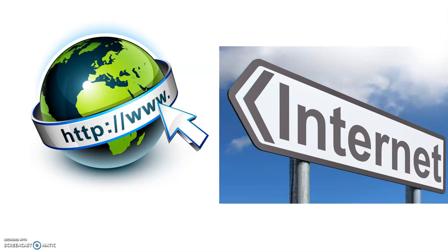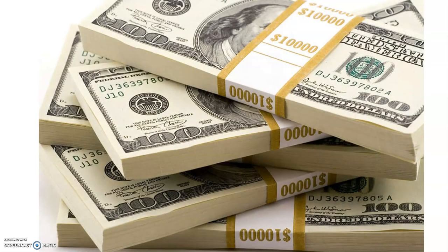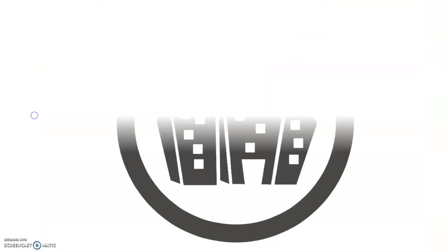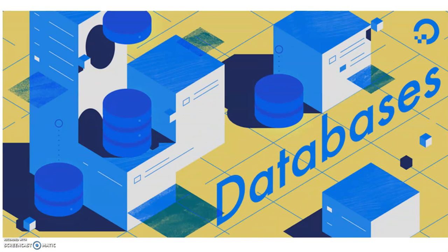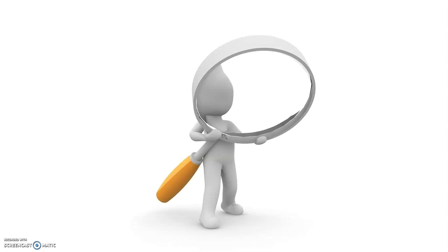Today we have the internet and the web to search for information and there is no need for the card catalog and the periodical index. The library pays a vendor company for databases available online, which provide access to articles in almost any subject or topic. You can search for electronic books and videos in databases as well as print books available in the library.